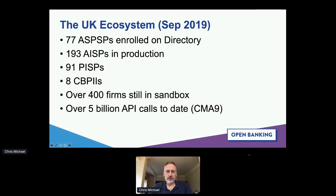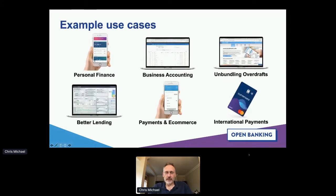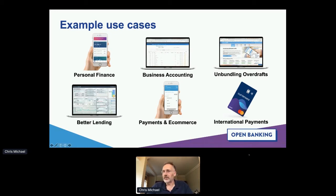A little bit more about the UK ecosystem. As of last month, we had somewhere in the region of 77 banks — ASPSPs as they're called in Europe — enrolled on the directory, largely following and building APIs in accordance with the standard we've developed. We've got several hundred third parties split between AISPs, PISPs, and CBPIIs — different types of regulated entity in PSD2 language. What's interesting is we've got almost twice that number of firms still in the sandbox who have registered intent but haven't yet got their regulatory authorization.